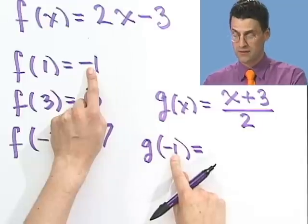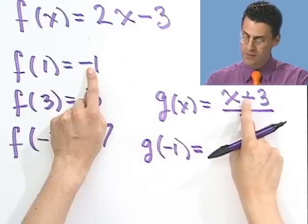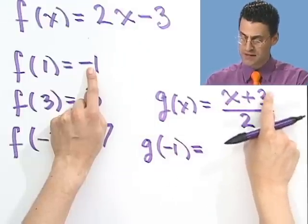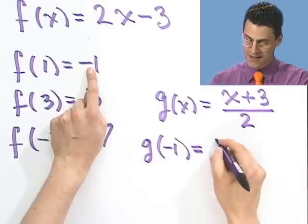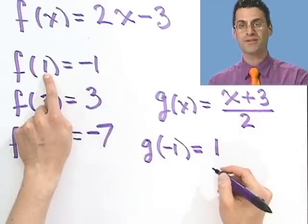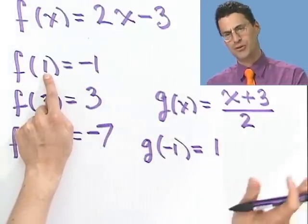If I put in a minus 1 here, I have minus 1 plus 3. That gives me a 2. I divide by 2, and look what I get. I get 1, and that's what I started off with. That's pretty cool. Now, that is pretty cool.